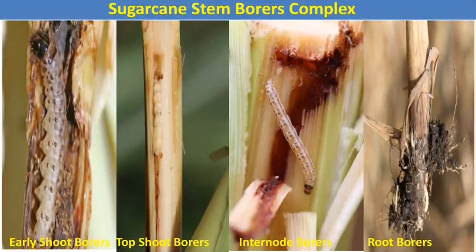The stem borer complex includes pests like early shoot borer, top shoot borer, internode borer, and root borer — four different borers that mostly attack inside the sugarcane stems and reduce the yield. These borers come under the order Lepidoptera, so the caterpillar is the damaging stage. The early shoot borer attacks at an early stage, entering the stems by making small circular holes on the surface and feeding on the inner content. As a result of feeding, the infested plants become wilting in appearance.